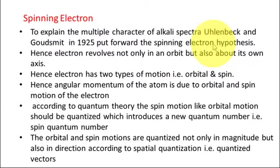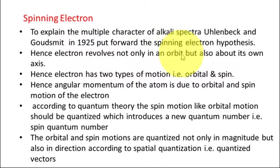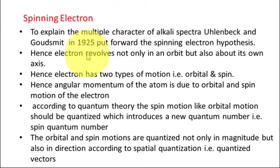The multiplet character of alkali spectra — like sodium, potassium, and other atoms — was explained by the spinning electron concept brought by Uhlenbeck and Goudsmit in 1925. The electron revolves not only in an orbit around the nucleus but also about its own axis. This concept of the spinning electron brought vast and drastic changes in physics and accounted for the fine structure of spectral lines in an atom.